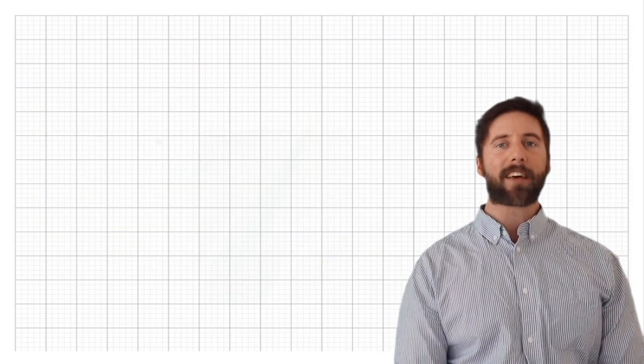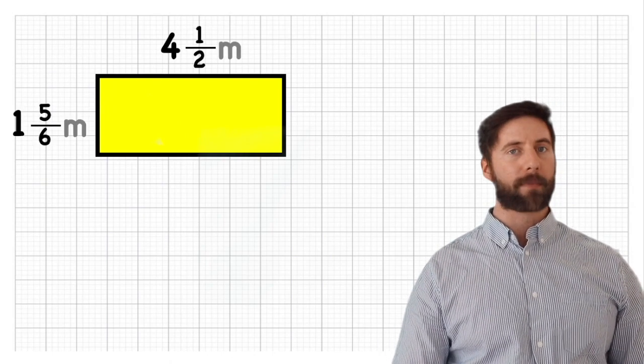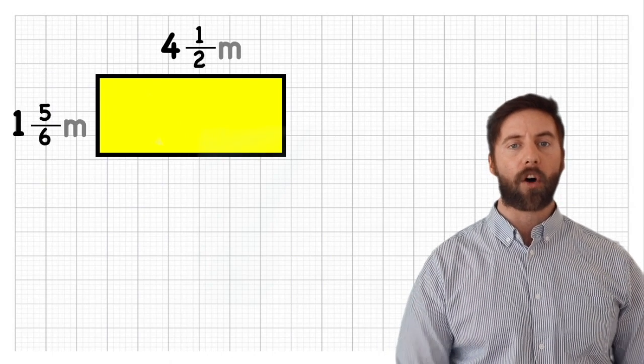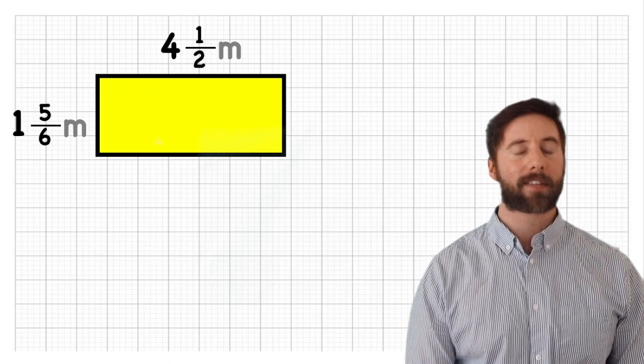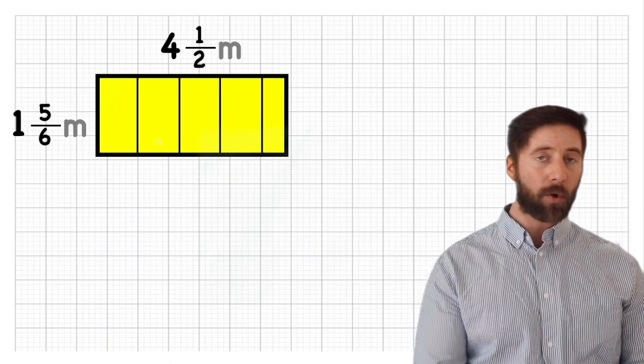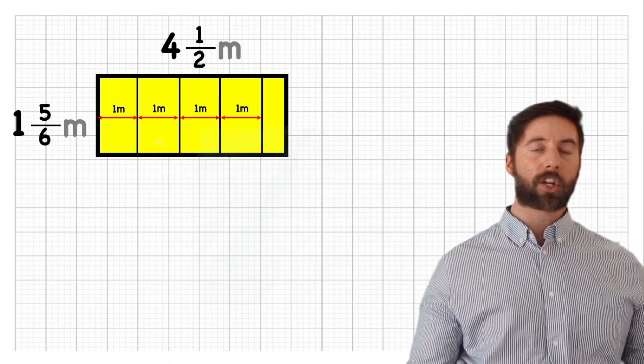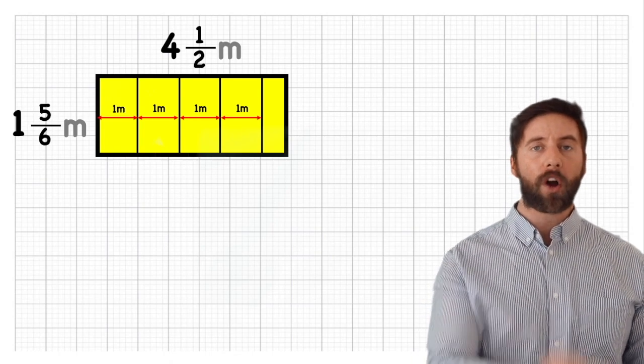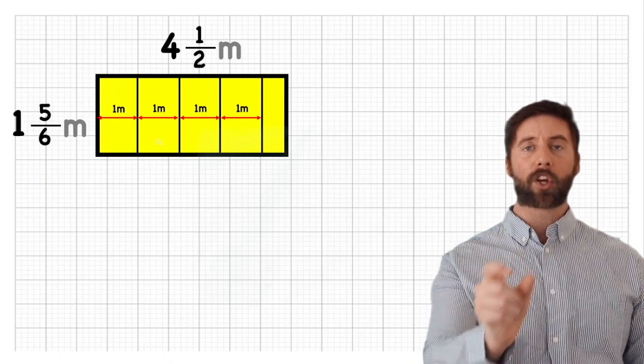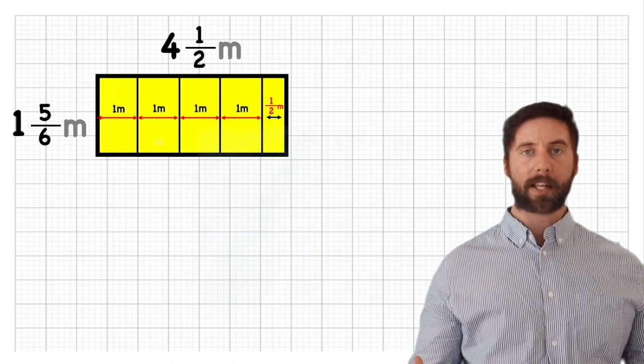So let's have a go at a question. Let's have a go at a rectangle with sides of four and a half metres and a width of one metre and five sixths. What does that mean? Let's try and break it down a little bit. Looking at the top length of four metres and a half a metre, that means we are going to be cutting our rectangle into four equal metre width columns going across, and then the last column is only going to be half a metre.